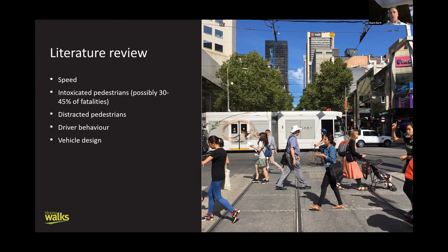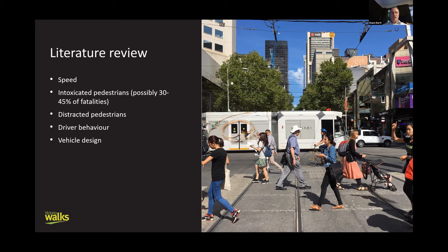Larger vehicles cause significant issues for pedestrians because your likelihood of being injured in a crash is essentially a function of the speed and weight of the vehicle that hits you. Big SUVs and pickup trucks tend to have a high front end, which means someone hit by that vehicle is more likely to go under the vehicle rather than over onto the bonnet — effectively being run over. This can cause much bigger injuries, and in the United States, pedestrian injuries have increased quite significantly, largely attributed to larger vehicles.